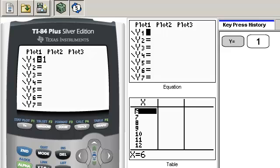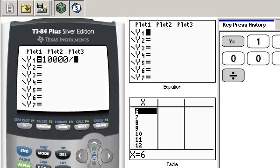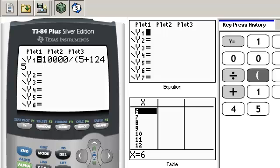So y equals 10,000 divided by, now it's divided by several things, so make sure that you put that in parentheses, 5 plus 1,245e. You need to find the e on your calculator. It is under the ln button, so I'm going to hit 2nd ln, which gets me the e button.